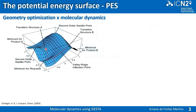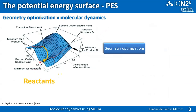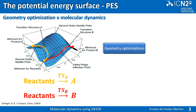The potential energy surface is a concept important to introduce because it is used both in geometry optimization and molecular dynamics. Here you have reaction coordinates on the horizontal axis and energies on the vertical axis, with important points highlighted such as the minimum for reactants and saddle points. In geometry optimization, you move from a minimum of a reactant, pass through a transition state which is a saddle point, and reach the minimum for the product, or you can follow another path and reach a different minimum.